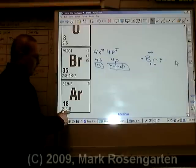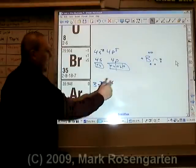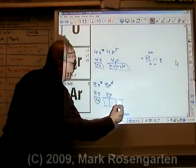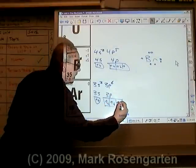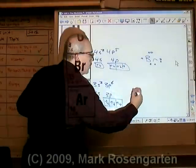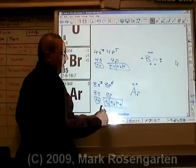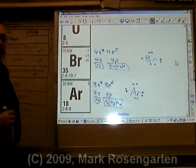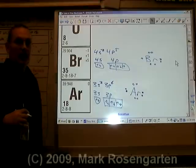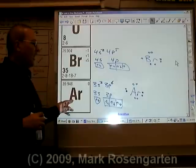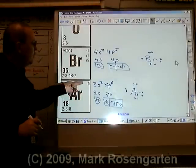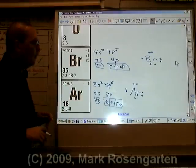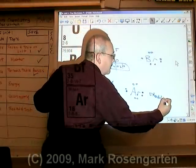Argon has eight valence electrons: 3s2, 3p6, which adds up to eight. All electrons are paired — there are no unpaired valence electrons. The dot diagram shows all four sides of the symbol filled with pairs. Argon has a complete, stable octet of valence electrons. Being a noble gas, argon is not capable of forming chemical bonds, which is why its ion charge, or oxidation number, is zero. It will not form an ion no matter what you try to react it with. Eight valence electrons is called a stable octet.